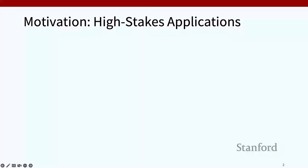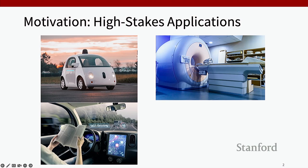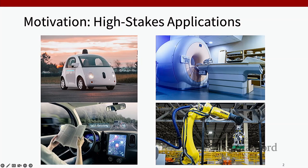The motivation behind this is that in a lot of robotic systems with learning-enabled components, the cost of failure is really high. For instance, in autonomous driving, a collision could kill people. In a healthcare setting, a wrong diagnosis could lead to the wrong treatment. And for a robot on the factory floor, these robots are working alongside people and we don't want them to cause injuries. These are just a few examples of critical high-stakes applications.